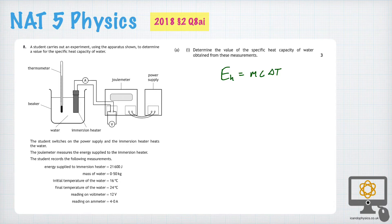So what we need to do is look at the information we've got in the question to try and solve the problem. This value here is the heat energy we put in, this is the mass of water here, and delta T is the change in temperature which goes from 16 to 24 — so that's a delta T of 8 degrees Celsius. The other readings we don't need in this question.